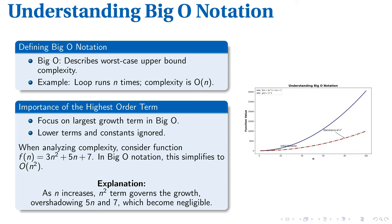In complexity analysis, our interest lies mostly in the term experiencing the most rapid increase. As such, we usually overlook constants and smaller-order terms. Imagine a function such as f(N) = 3N² + 5N + 7. The Big O notation of this function is O(N²).